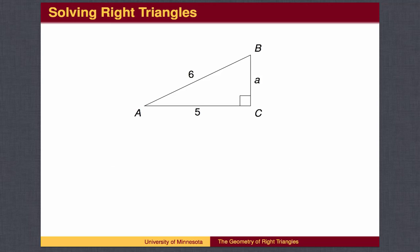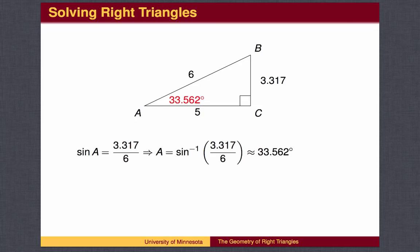We can find the missing parts of this right triangle first by using the Pythagorean Theorem, and then finding one angle by the inverse sine. On your calculator, divide 3.317 by 6 to get 0.55283. Then hit the inverse sine key — make sure your calculator is in degree mode. We could also use the inverse cosine or inverse tangent to calculate the angle. We then subtract angle A from 90 degrees to find angle B.